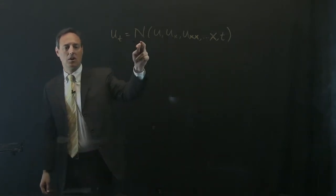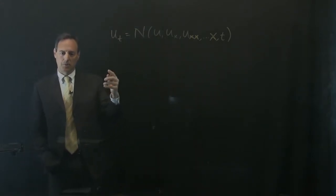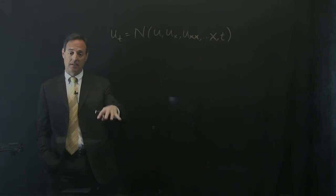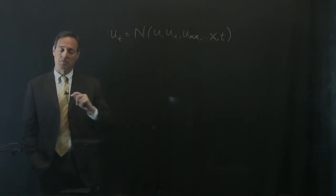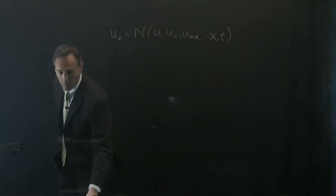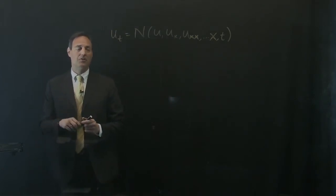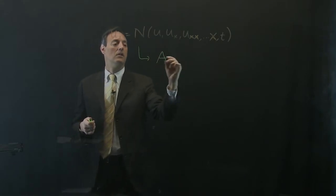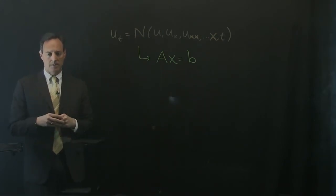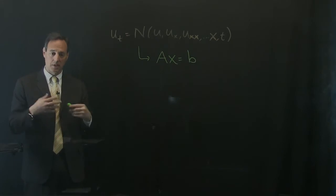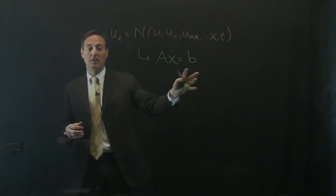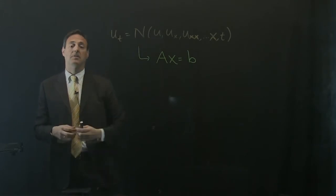The problem is we don't know what N is. We take a system, measure it, and want to extract the right type of model — some parsimonious model representation. Just like last time, all of this leads to solving Ax = b. We build a library and do a linear regression to solve for the terms that most likely represent the dynamics.